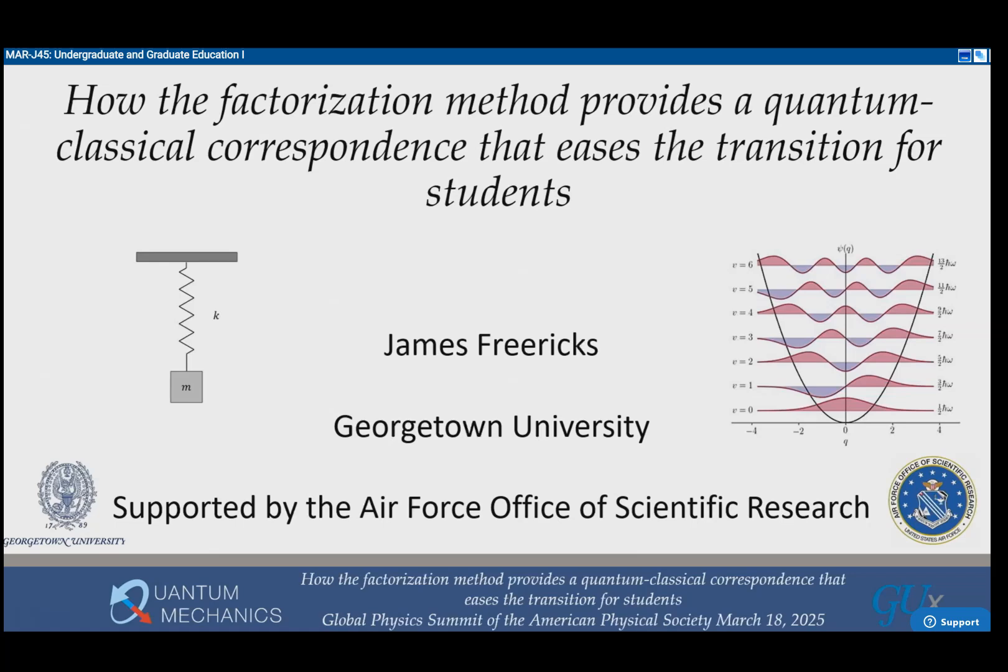The title of my talk is How the Factorization Method Provides a Quantum Classical Correspondence That Eases the Transition for Students. In quantum mechanics we think about teaching quantum in a spins-first approach or a wave function-first approach, and neither method has any connection with classical mechanics. Sometimes people teach a historical perspective to get students to understand what about classical mechanics needed quantum mechanics, but those experiments are not well understood by students because it's not easy to evaluate what black-body radiation is in a classical theory.